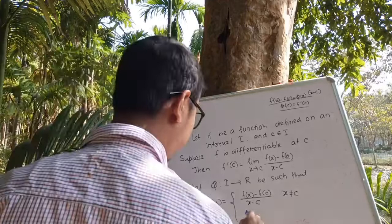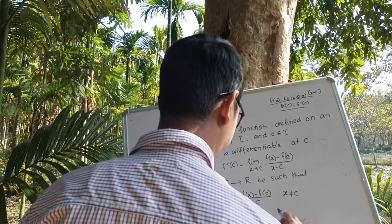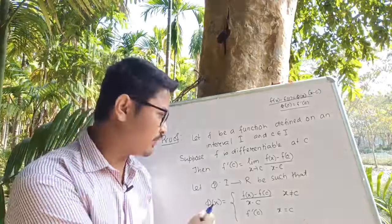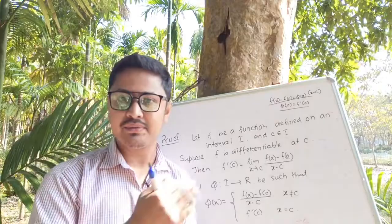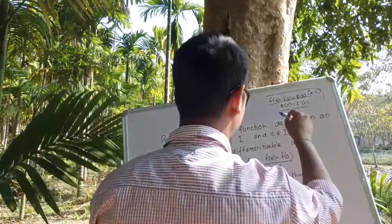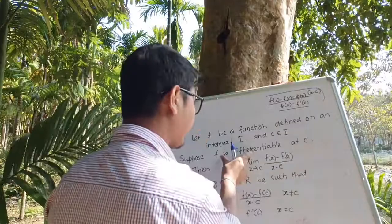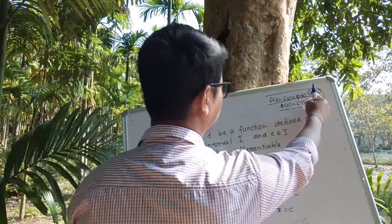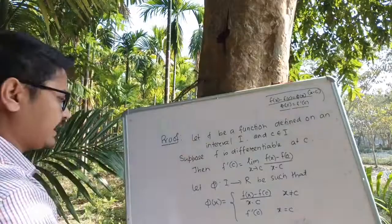So we define: phi(x) equals f(x) minus f(c) divided by (x minus c) when x is not equal to c, and phi(x) equals f'(c) when x equals c. This way the function phi is defined on the entire interval. We need to show this function is continuous and satisfies the rule f(x) minus f(c) equals phi(x) times (x minus c), with phi(c) equals f'(c).